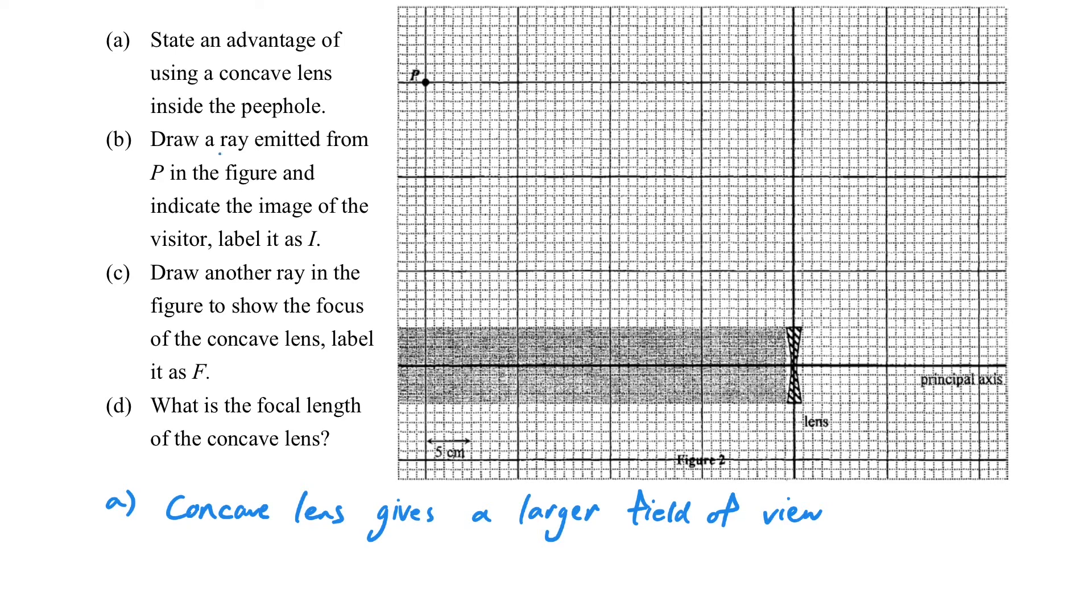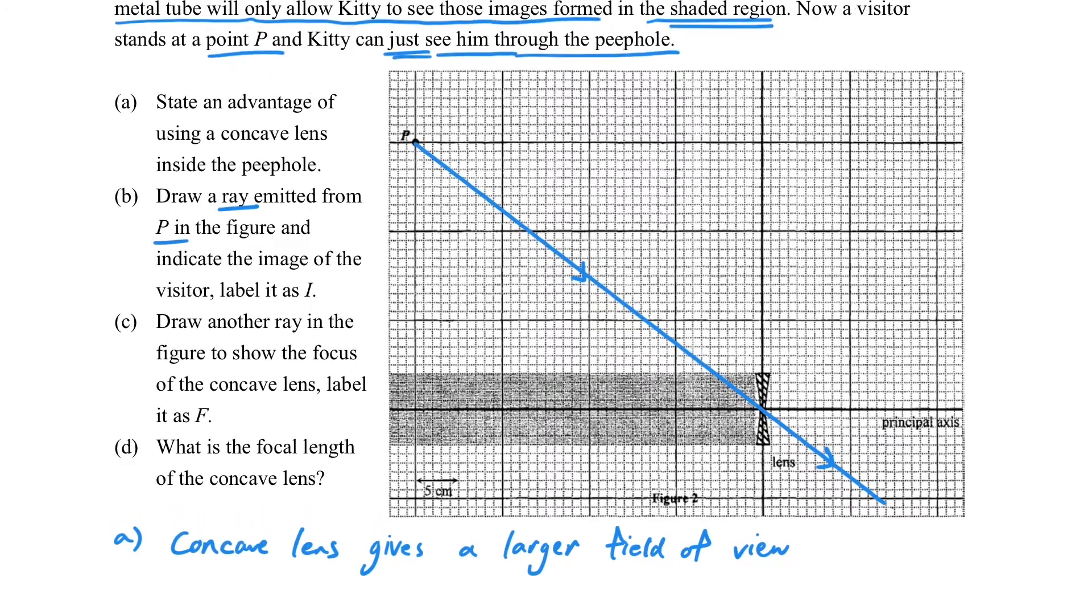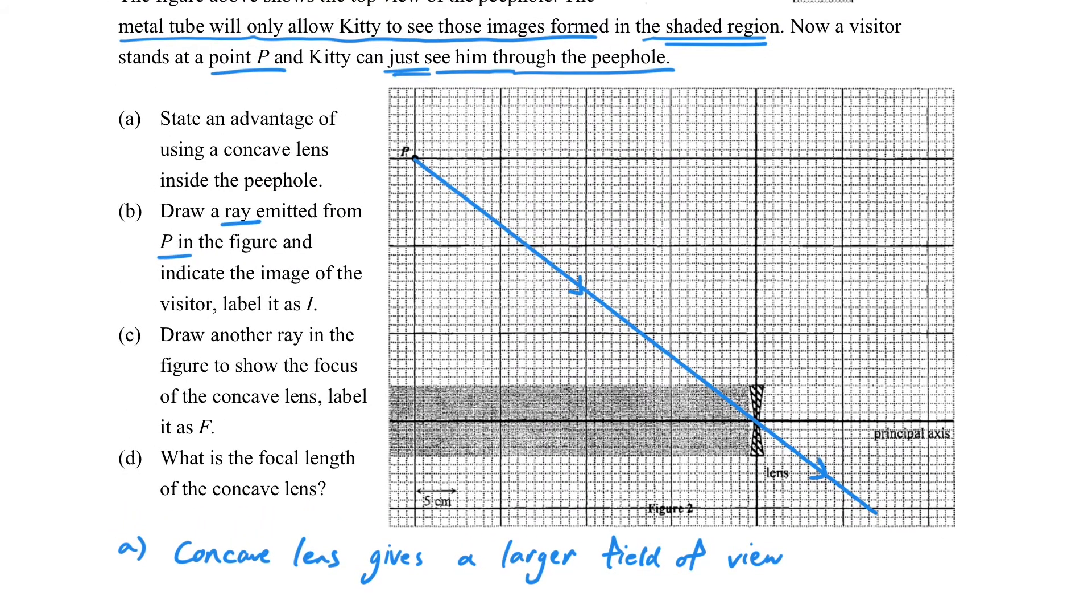And then we will draw the light ray from P and then find the image. So how to draw the image? We don't have the focus and we don't know the focal length, but at least we have rule number three. So we can draw a light ray directly to the center and it will just keep going like this. Then where is the image?